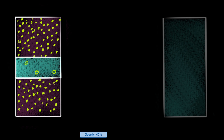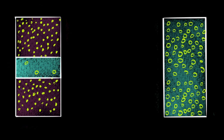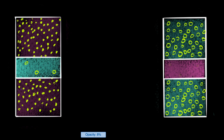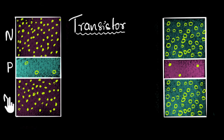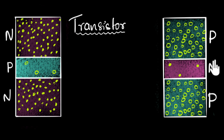Their idea was to use an N-type semiconductor with a lot of electrons, and sandwich in between a P-type semiconductor with very few holes. Or another thing you could do is take a P-type semiconductor with a lot of holes, and sandwich in between an N-type semiconductor with very few electrons. They called it the transistor. Since this material has N, then P, then N-type again, we call this the NPN transistor. Similarly, if you have P, then N-type, then P again, we call this the PNP transistor.